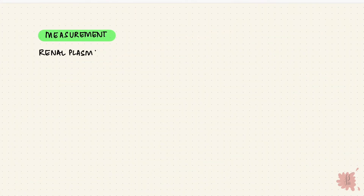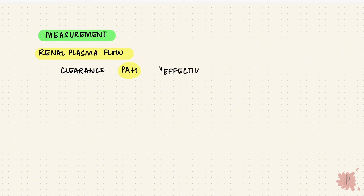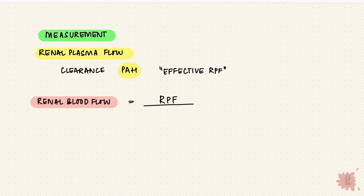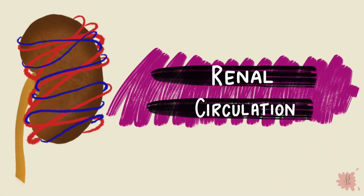Lastly, how is renal blood flow measured? Renal plasma flow is measured using para-aminohippuric acid (PAH). By measuring its clearance, we can get the renal plasma flow. However, PAH is only about 90% cleared, so it gives the effective renal plasma flow. The renal blood flow is the renal plasma flow divided by 1 minus the hematocrit. And that is renal circulation.